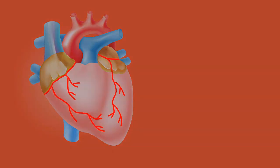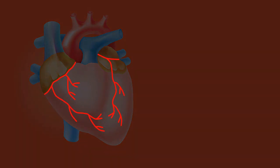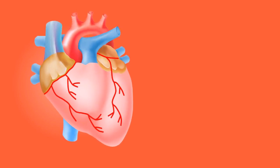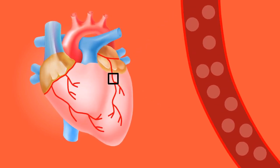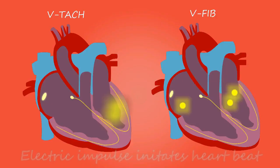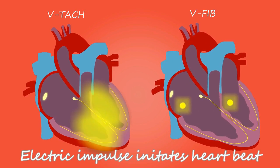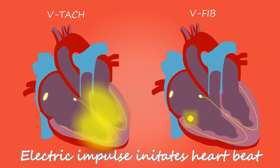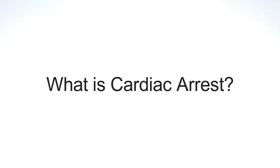Our heart also needs oxygen for survival, so it has its own network of capillaries and blood vessels around it for blood supply — you can see the figure. Through these capillaries, our heart gets nutrition for its survival. But for the heart to work as a pumping machine, it also needs to contract, and that contraction is brought about by electrical impulse. So electrical impulse is also important for the functioning of our heart, and this makes the difference between cardiac arrest and heart attack.